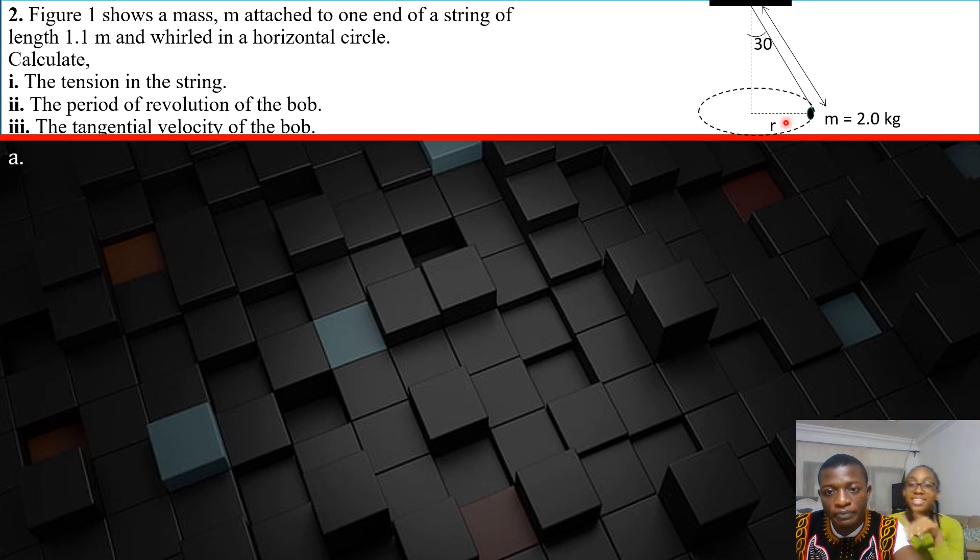This horizontal component has significance because remember this is a conical pendulum. The significance of this horizontal component is that it provides a centripetal force that keeps this particle in this circular path. So we're going to use that: T sin 30 provides a centripetal force which is m omega squared r, and we'll call that equation 1.